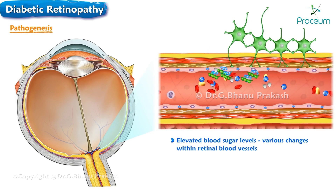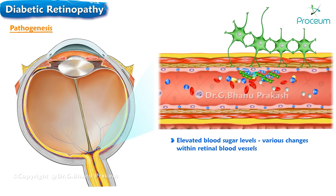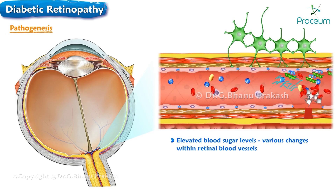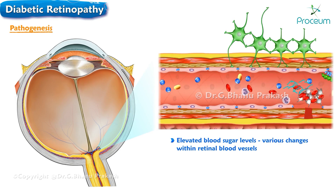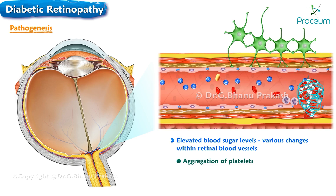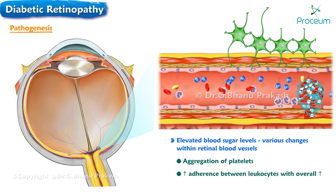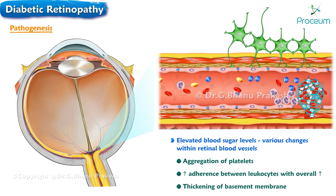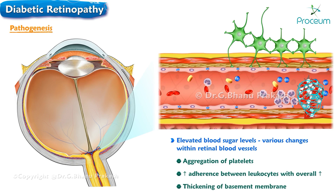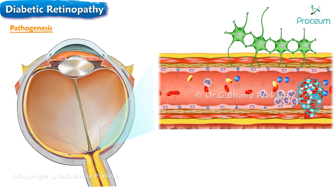Let's talk about the pathogenesis of diabetic retinopathy. Elevated blood sugar levels in diabetes contribute to various changes within the retinal blood vessels. These changes include platelet aggregation, increased adherence of leukocytes, and thickening of the basement membrane. These factors collectively promote the formation of thrombus, leading to the blockage of vessels and subsequent retinal hypoxia.